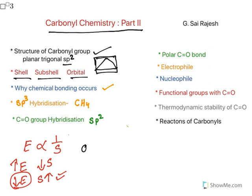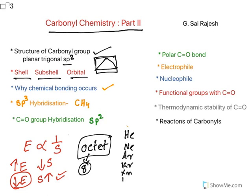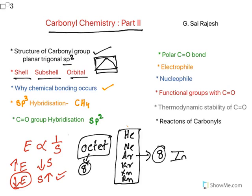This can be explained with the octet rule. Octa means 8 — if the valency shell has 8 electrons, the orbitals are completely filled and the atom or molecule is stable. Inert gases like helium, neon, argon, krypton, and xenon satisfy the octet rule; their valency shell is completely filled, giving them low reactivity. That is why they are called inert — they do not participate in reactions.